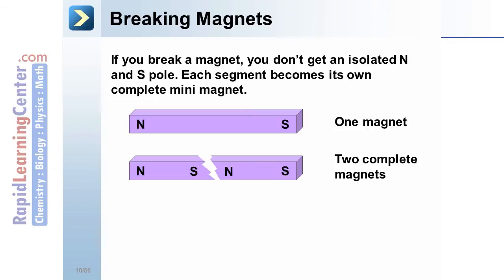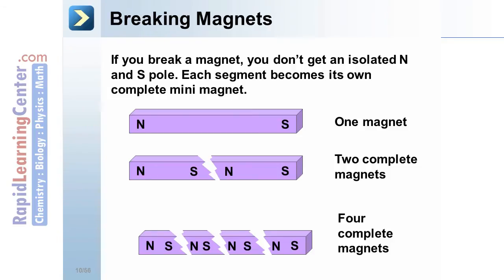Two south poles, two north poles. Even if you go further and break those pieces, you once again end up with complete magnets. A north and a south pole on each.